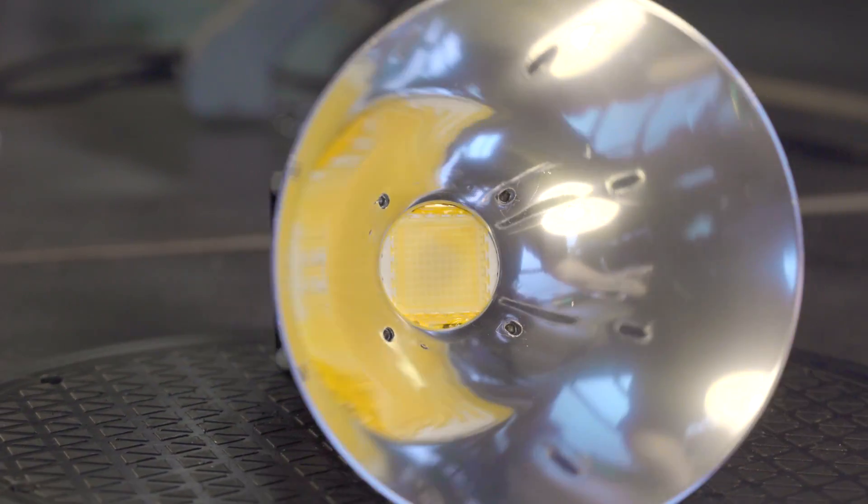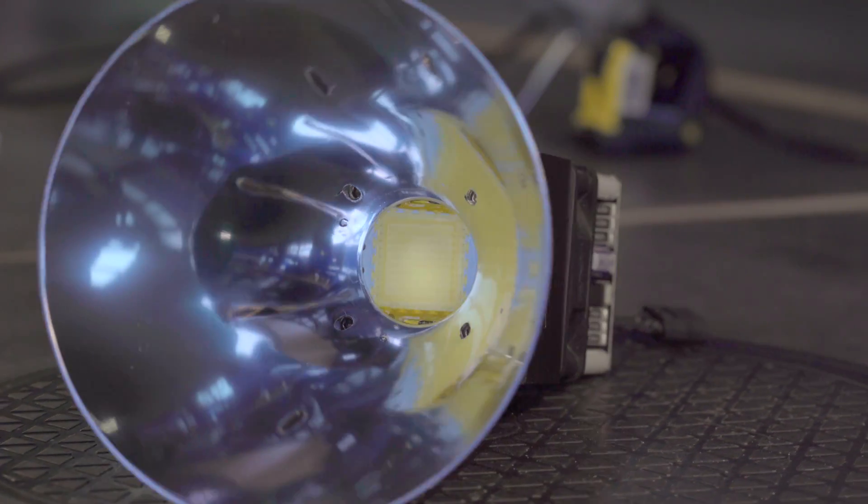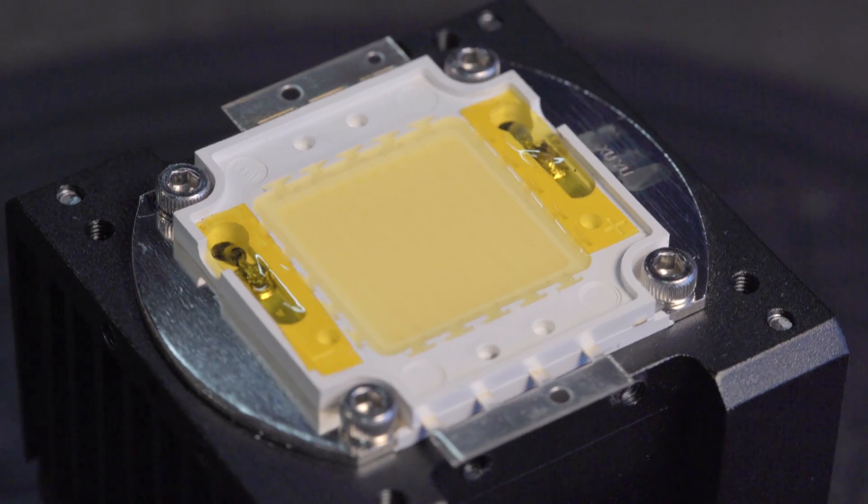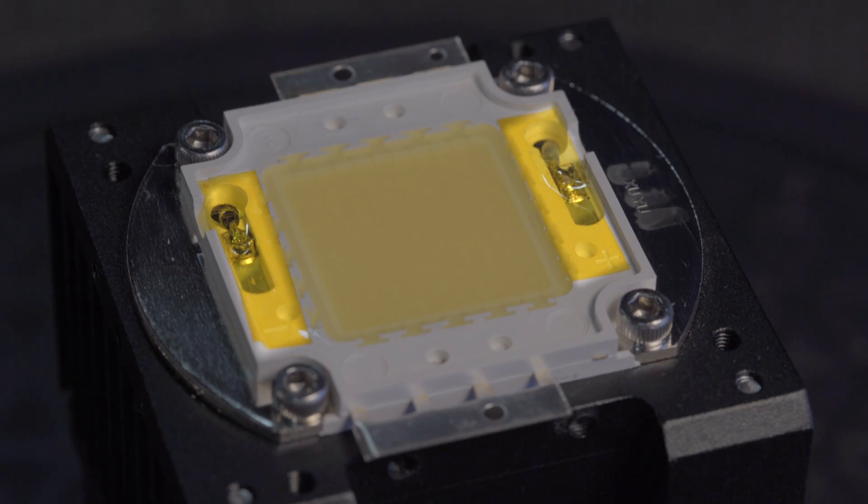To install a parabolic reflector on your 100W LED module, first make sure the solder connections on the LED emitter are insulated with Kapton tape.